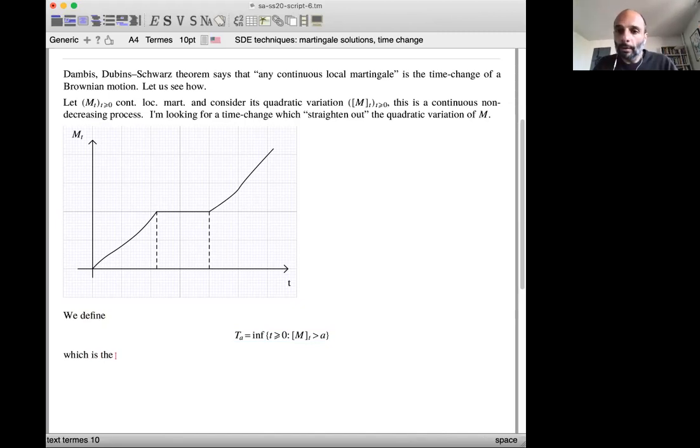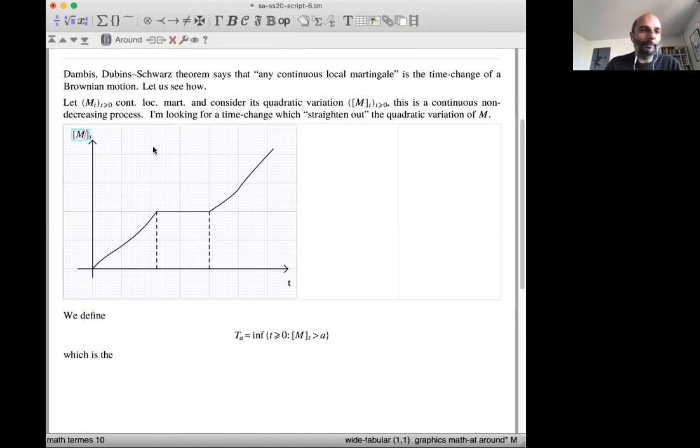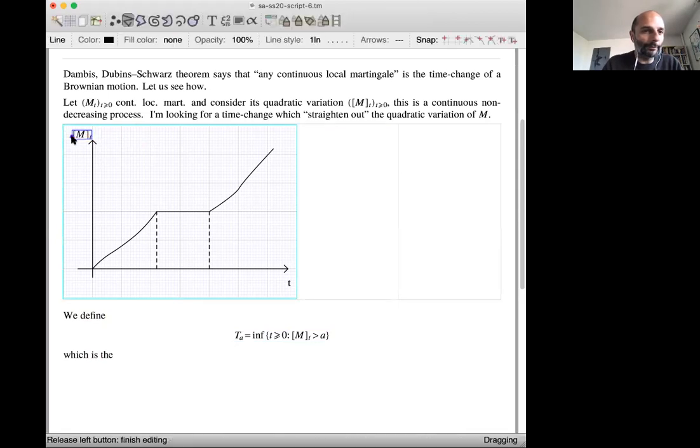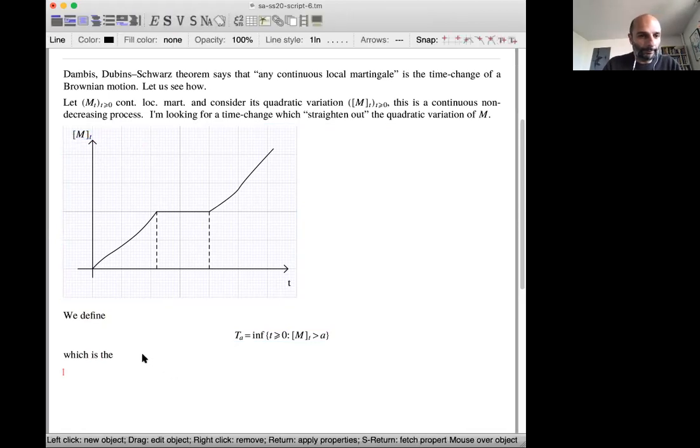The graph is the quadratic variation, right? Sorry, can you repeat? Because I don't hear you very well. The graph that is drawn there is the quadratic. Yeah, you're right. This is the quadratic variation, not the martingale. Of course. I'm interested in quadratic variation.